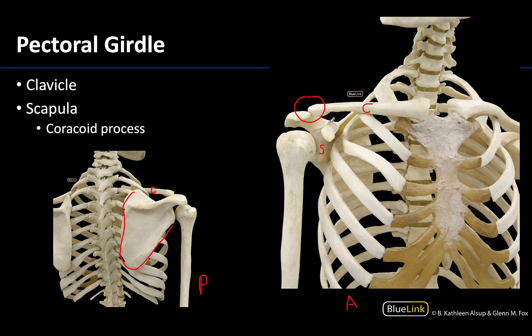There is one projection of the scapula that we want you to be able to identify in this session, called the coracoid process. This is going to be anteriorly projecting, and the reason we're having you identify this particular structure is that the pectoralis minor is going to have a distal attachment on the coracoid process.